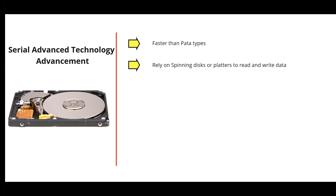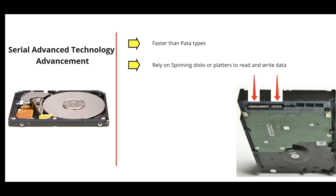SATA is faster than PATA. Both SATA and PATA rely on spinning disks or platters to read and write data. SATA evolved from PATA. The term 'serial' in SATA refers to data being sent one bit at a time down a single connection in each direction, with separate connections for data going in and out. On a SATA hard disk, the larger connector is for power and the smaller one is for data.